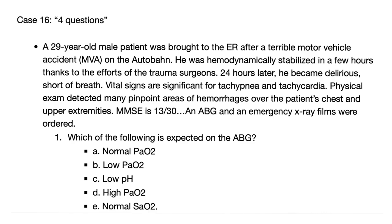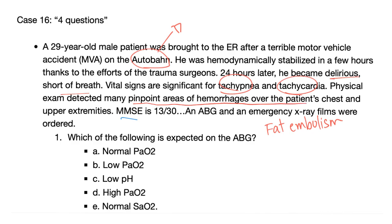Which of the following is expected on the ABG? First, what's the diagnosis? This is a car accident — he was stable at first, but then delirium and shortness of breath, tachycardia and tachypnea. Pinpoint areas of hemorrhage over the chest and upper extremities, and deterioration of the mini-mental status exam. This is probably fat embolism. How do you know? It's a car accident on the autobahn, which has no speed limit — so probably there is a long bone fracture. Then he became unstable with tachypnea, tachycardia, delirium, and shortness of breath. The pinpoint areas of hemorrhage over the chest point directly to fat embolism.